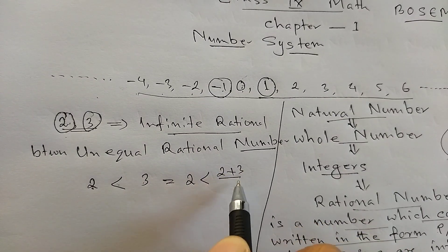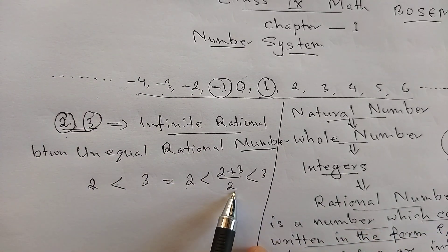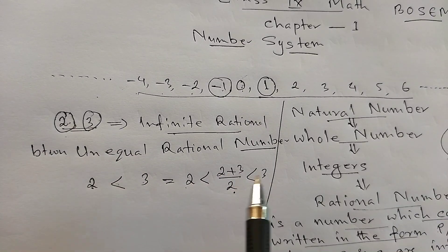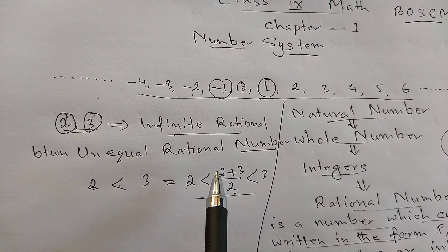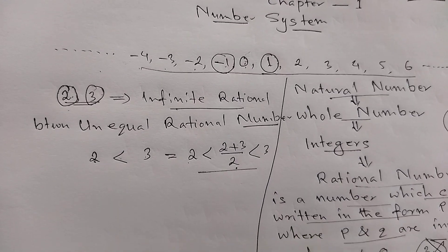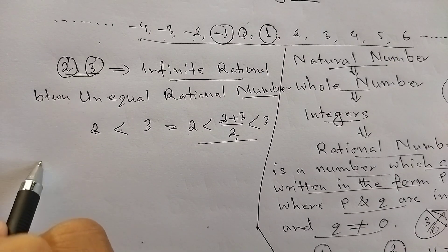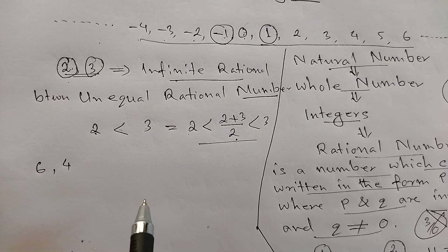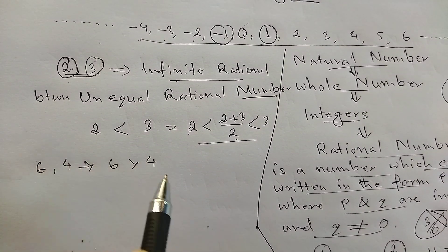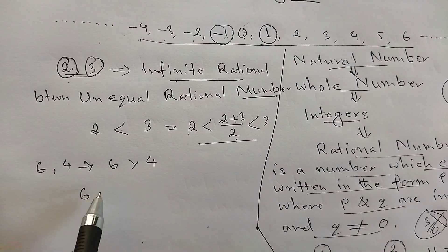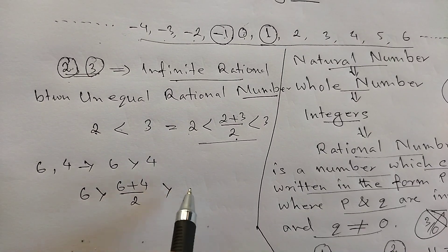2 plus 3 divided by 2 gives a rational number between 2 and 3. This is 2.5, which lies between 2 and 3. This formula helps find a rational number between any two numbers. For example, 6 is greater than 4.